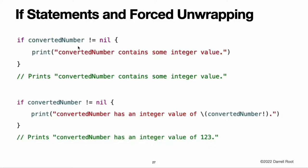If statements and forced unwrapping. You can use an if statement to find out whether an optional contains a value by comparing the optional against nil, using the equal to operator or the not equal to operator. If an optional has a value, it is considered to be not equal to nil. Once you are sure that the optional does contain a value, you can access its underlying value by adding an exclamation point to the end of the optional's name. The exclamation point effectively says: I know that this optional definitely has a value — please use it. This is known as forced unwrapping of the optional's value.